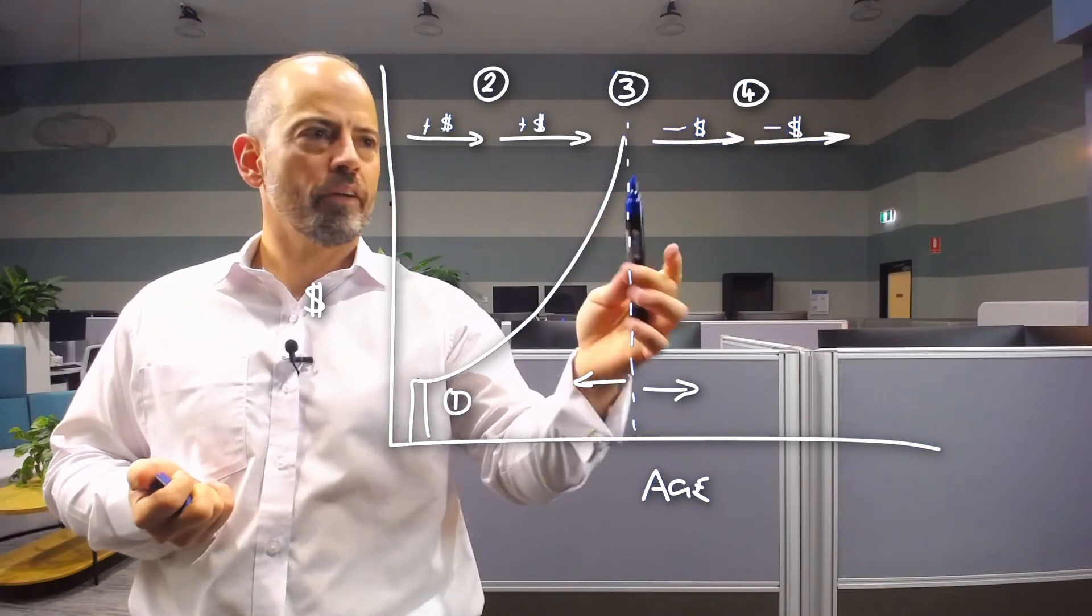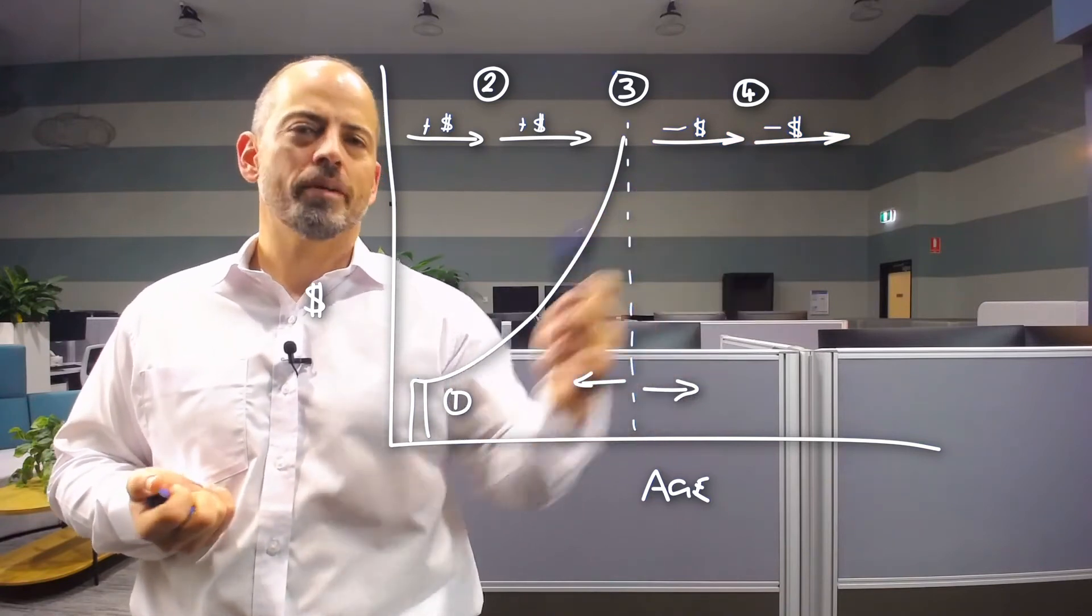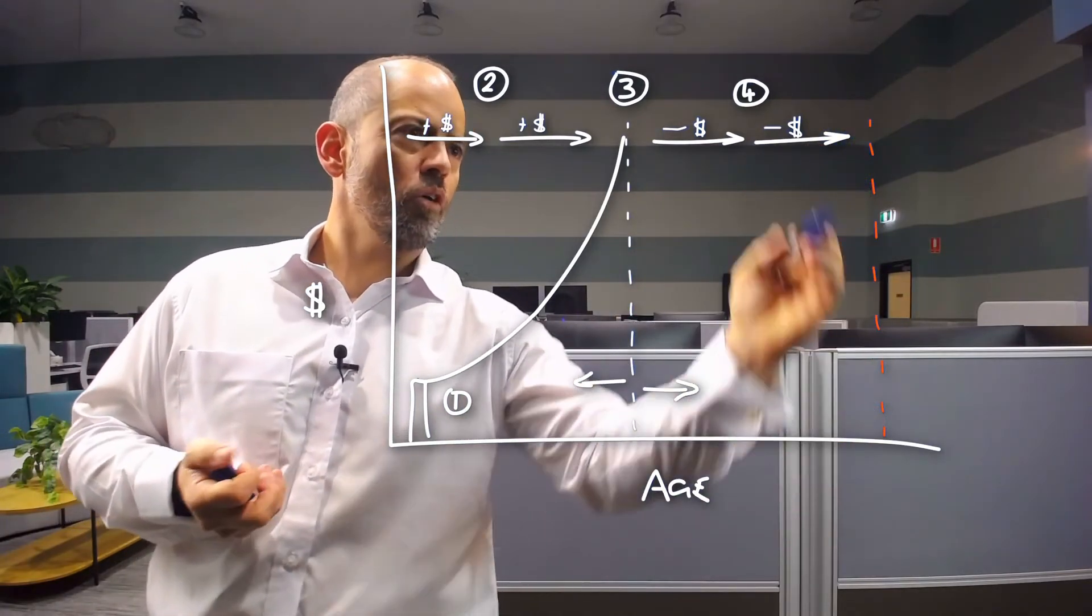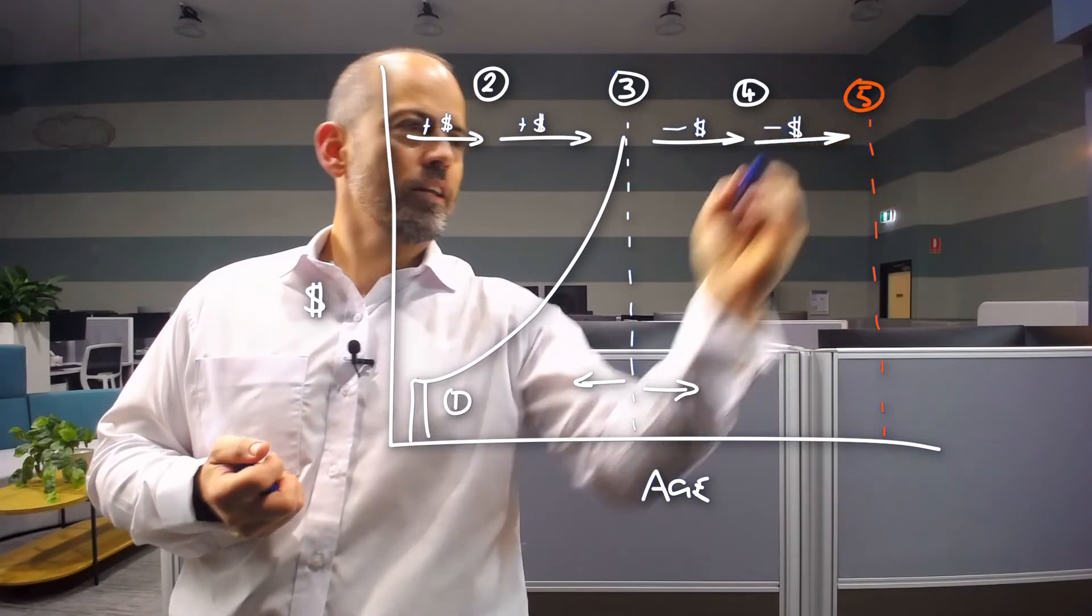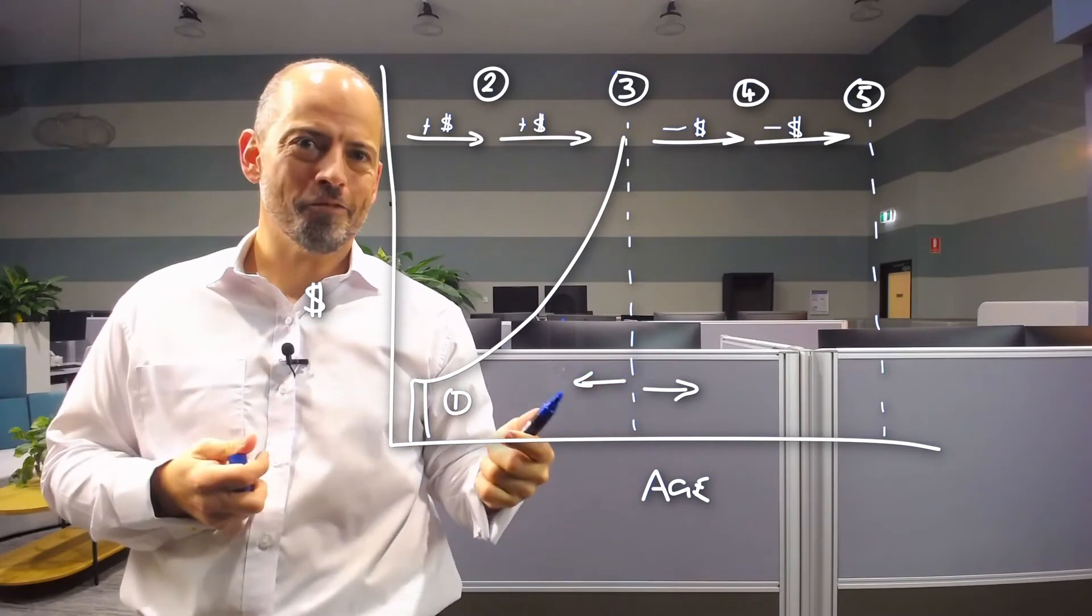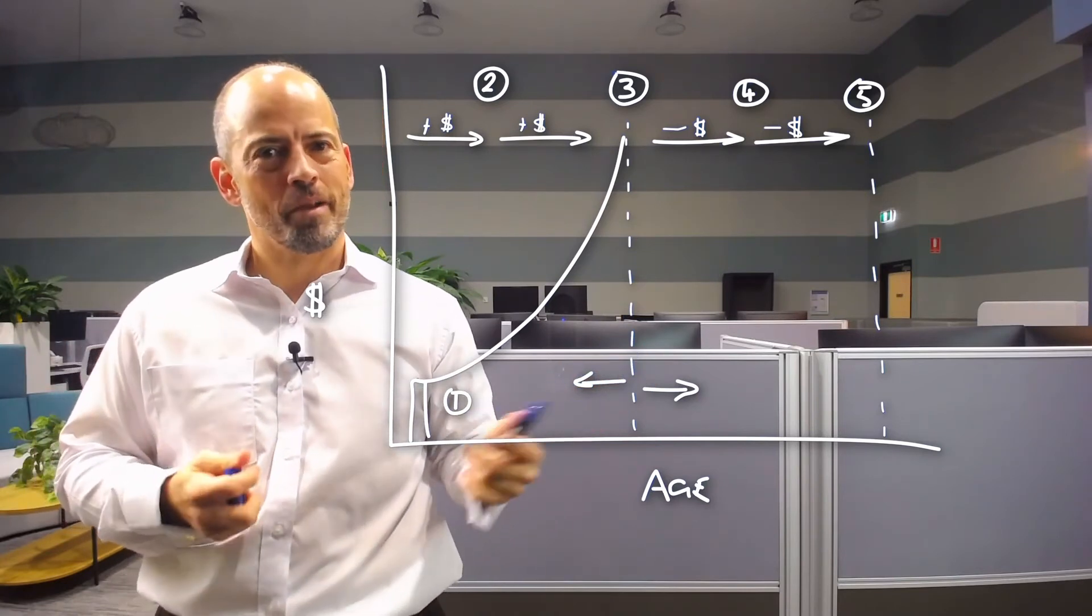This is important and it varies once again over time depending on your goals. It might mean that you draw down at a higher rate earlier in retirement than you do later in retirement. But getting an understanding of that variable, along with how long do you need that capital to last for, or that income stream to last for?